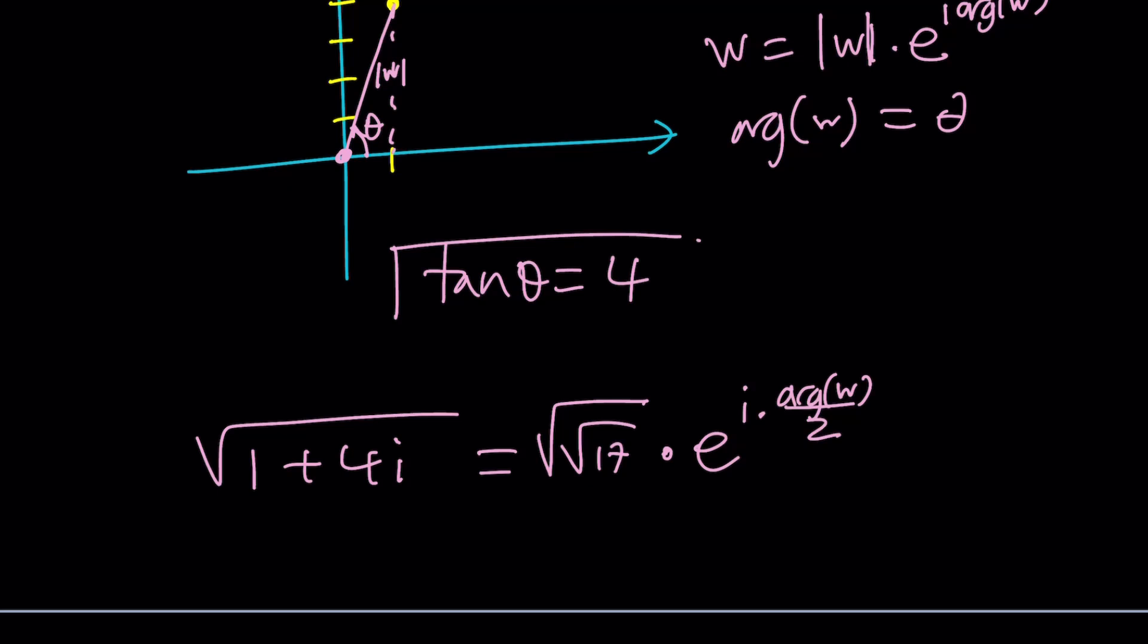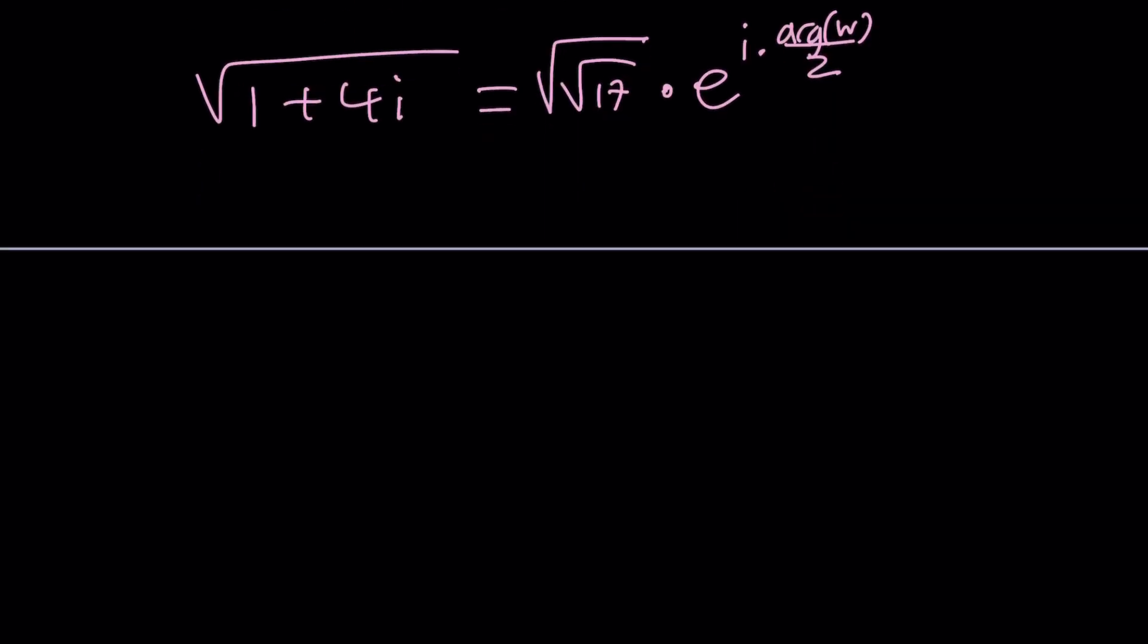Well, if you know tangent theta is equal to 4, can you find half of that? Yes, there's a really good way of finding it. Let me show you geometrically this method I just think is awesome. So this is theta and we know that tangent theta is 4, so we can kind of put 4 and 1. Definitely not drawn to scale at all, but just bear with me on this. Obviously, this is square root of 17.